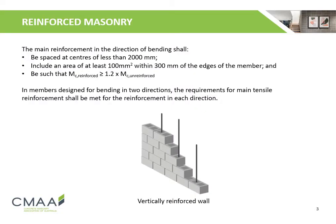The main reinforcement in the direction of bending shall be spaced at centres of less than 2000 mm, include an area of at least 100 mm², and be such that the reinforced bending moment capacity is greater than or equal to 1.2 times the unreinforced bending moment capacity. In members designed for bending in two directions, the requirements for main tensile reinforcement shall be met for the reinforcement in each direction.